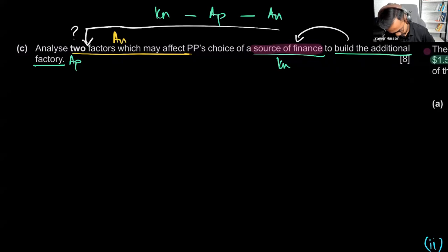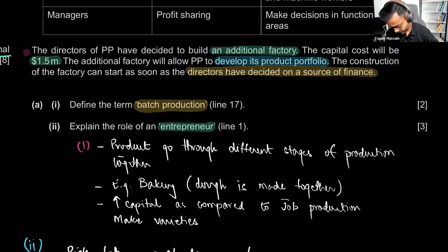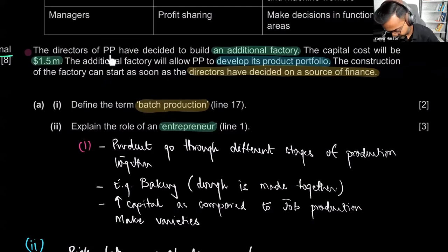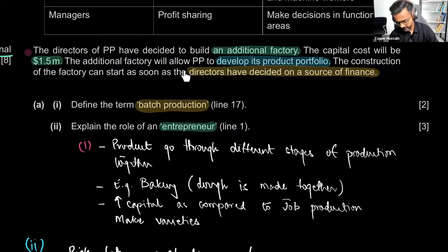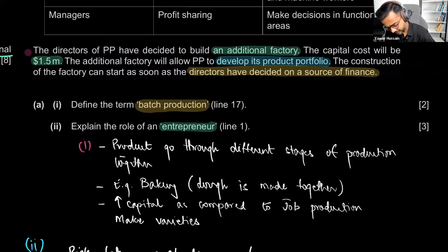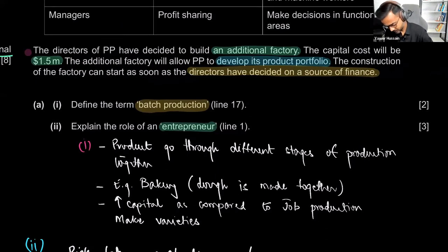The case study tells us: the directors of PP have decided to build an additional factory, the capital cost will be $1.5 million, the additional factory will allow PP to develop its product portfolio, and construction can start as soon as directors have decided on a source of finance. Consider yourself here as a consultant to the director.